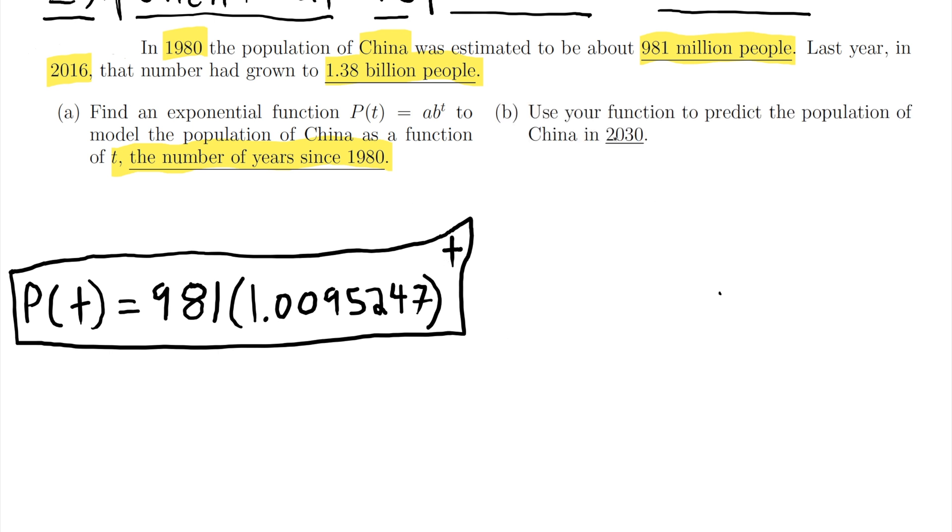So there's a second part to this problem which is use your function to predict the population of China in 2030. What that means is that the time in the year 2030, which again is the number of years since 1980, is going to be 50 because 2030 is 50 years since 1980.